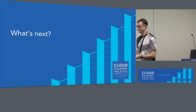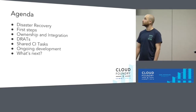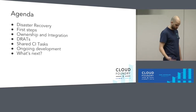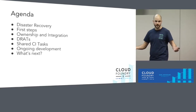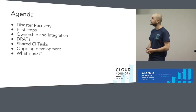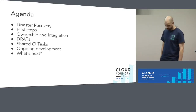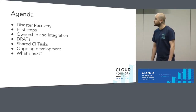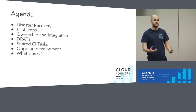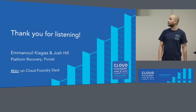I'll hand back to Emmanuel to sum up. Thank you, Josh. Let's recap what we've seen. We started asking ourselves what is disaster recovery, framed the problem, and saw how to test-drive it. Then we presented the first steps we took, how we distributed ownership to multiple teams, and tried to integrate everything back together. Then we examined how the DRATS framework works, the CI tasks we distributed to teams to reuse in their own pipelines so they won't have to reinvent the wheel. Finally, we saw that this is a living project — it still gets pull requests, we still try to maintain and improve it. And we examined what's coming next: taking this idea of driving disaster recovery for a platform and applying it to different things like BOSH and Kubernetes. That's our talk. Thank you for listening. Do we have any questions?